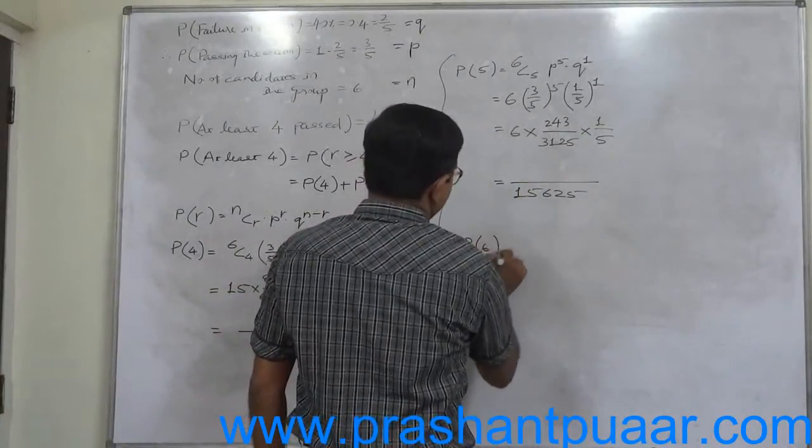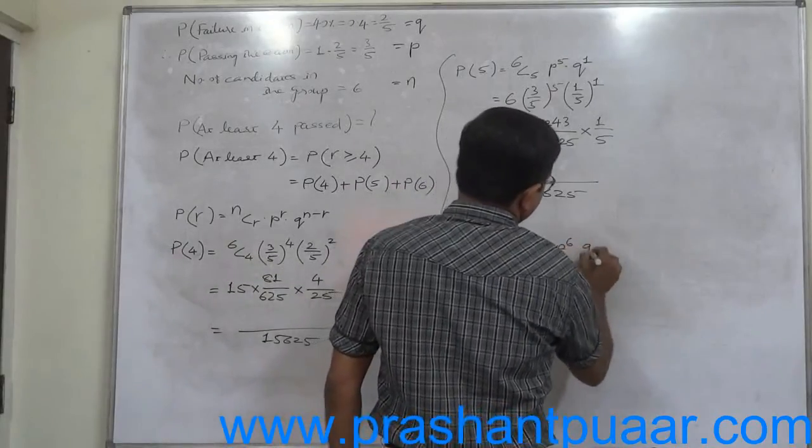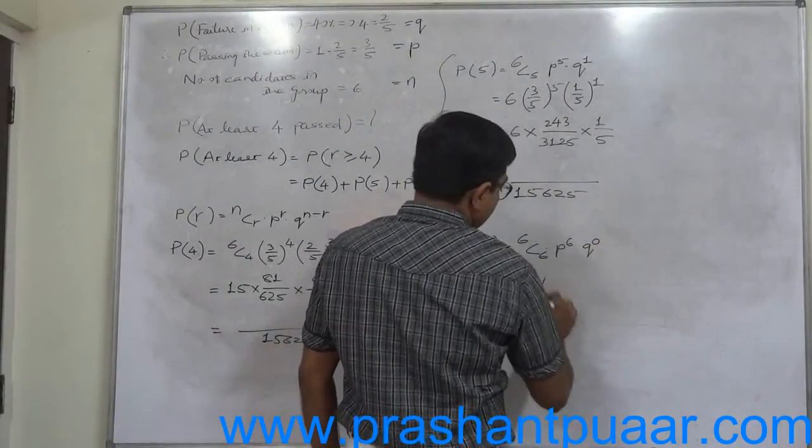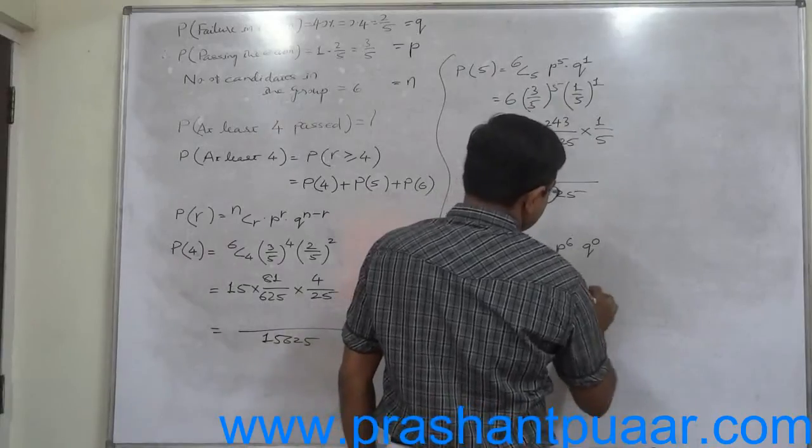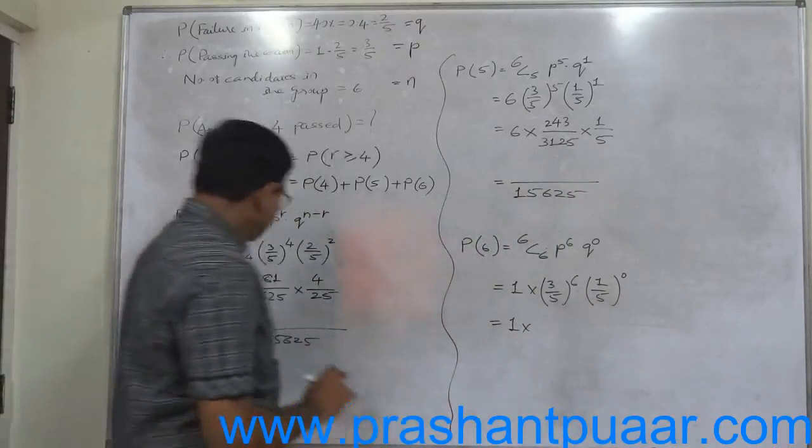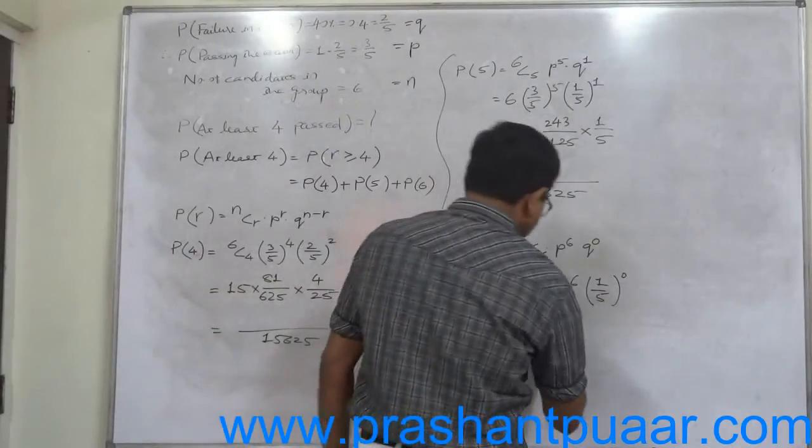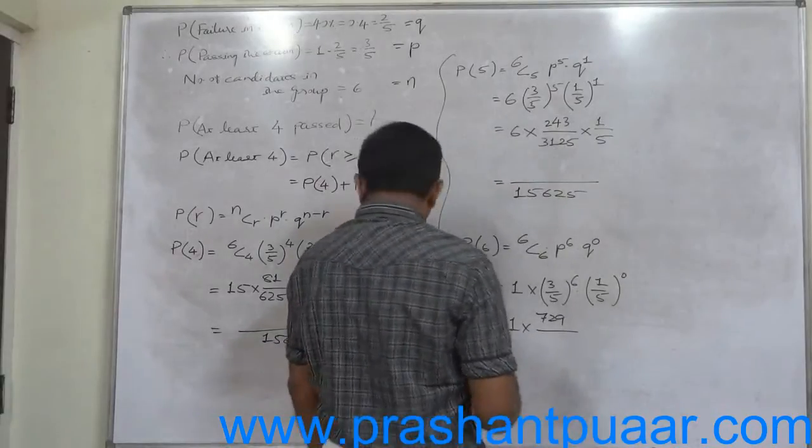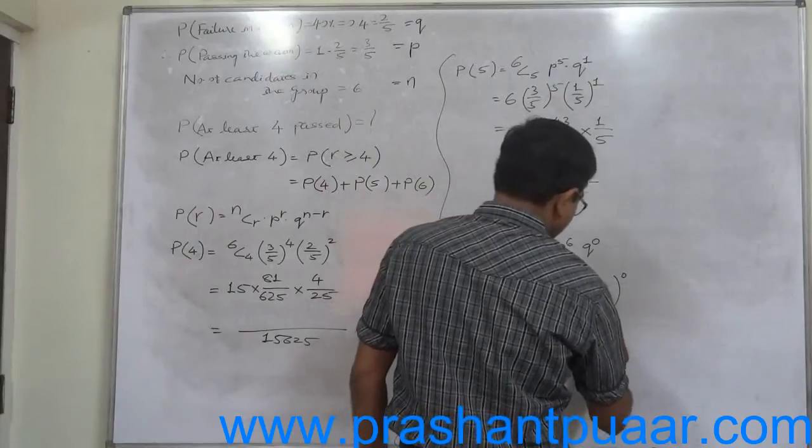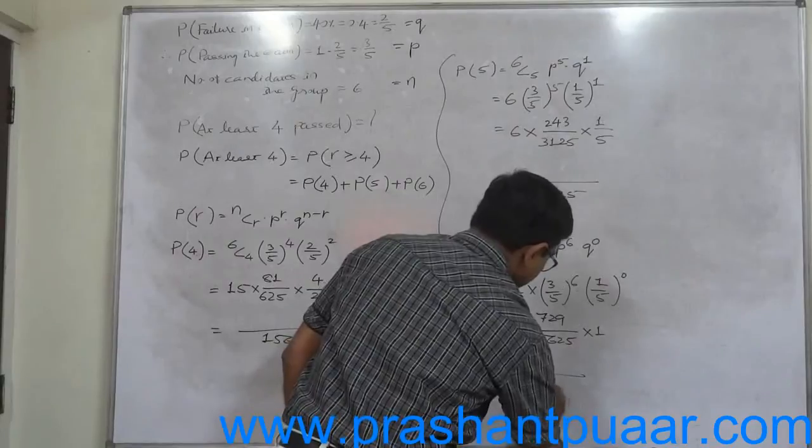Probability of all 6 success is equal to 6C6 into P raise to 6 into Q raise to 6 minus 6, 0. 6C6 is 1. P raise to 6 means 3 by 5 raise to 6. 3 raise to 6: 3 is again 243 into 3, it is 729, divided by 5 raise to 6, 15,625. Anything raise to 0 is 1, so the final answer is 729 divided by 15,625.